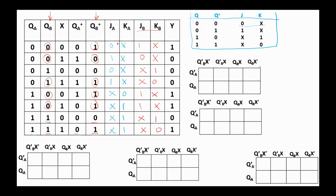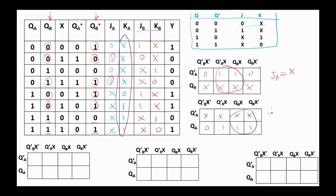We can use K-maps to derive the simplified expressions for the flip-flop inputs. JA equals 1 on minterm 1, minterm 3, and don't-care on minterms 4, 5, 6, 7. So JA equals X. KA equals 1 on certain minterms with three ones, so KA equals X or QB.